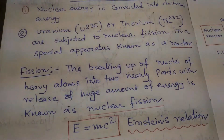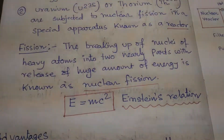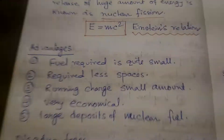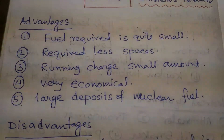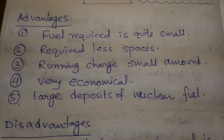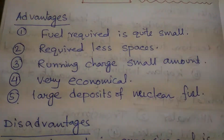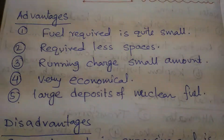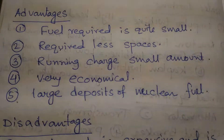Nuclear power stations have advantages and disadvantages. The advantages of this power plant are: fuel required is quite small, it requires less space, running charges are a small amount, it is very economical, and there are large deposits of nuclear fuel all over the world.